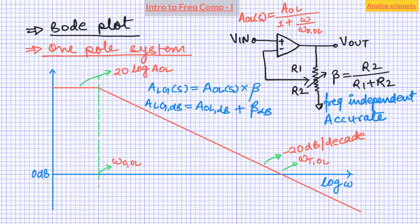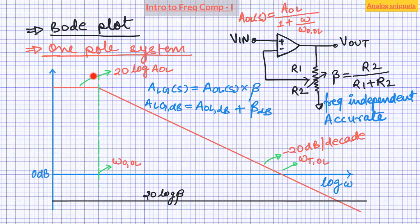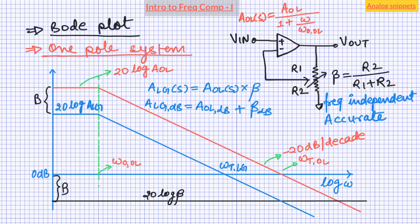The loop gain is the product of the forward gain — which in this case is simply the amplifier gain — and the feedback factor. When converted into dBs for Bode plots, loop gain is simply the sum of the open loop gain and the feedback factor. For beta of 1 or maximum feedback, the loop gain equals the open loop gain and the Bode plot will coincide with the forward gain plot. For an intermediate value of beta, the Bode plot of the loop gain is simply the forward gain plot shifted down by the amount of the feedback factor. Notice that the bandwidth of the loop gain plot is the same as the bandwidth of the forward gain path. Next we turn our attention to the closed loop gain.